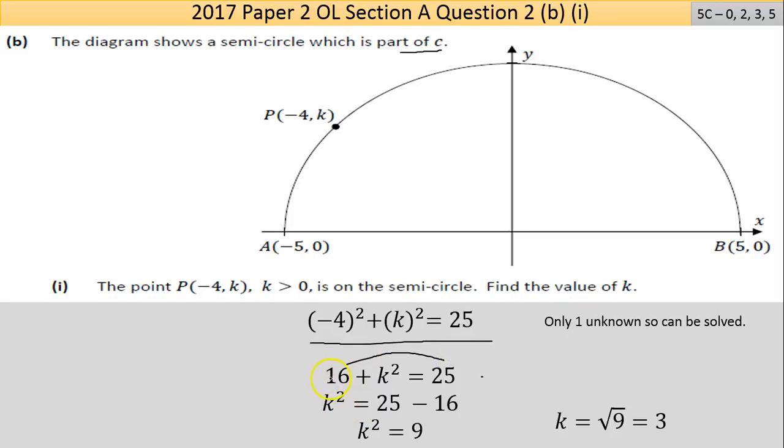So just simplified it. Then I'm going to leave the K² on one side and move all the numbers across. The 16 was being added on the left-hand side, moves across, the operator changes to the opposite. The opposite of addition is subtraction. And we have K² equals 35 take away 16, K² equals 9.